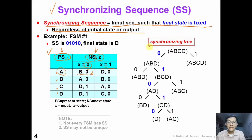On the right-hand side we show a synchronizing tree. The root of the tree contains all four states A, B, C, and D. If we apply input 0, the final state for A would be B, for B would be A, and C and D are both D. So in the next level, the states will be A, B, and D.